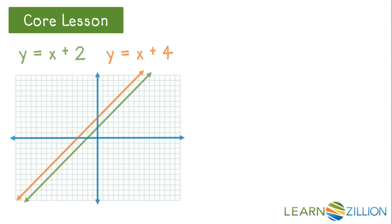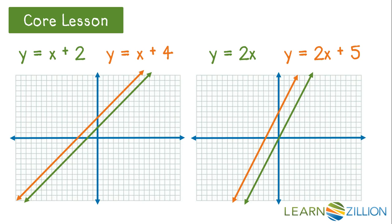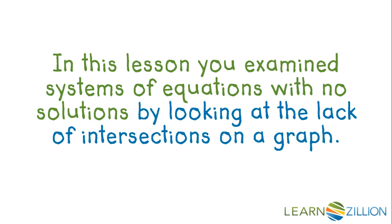In summary, sometimes we are unable to find a solution to a system of equations because there is no point of intersection on the graph. This means that the system of equations in two variables has no solutions that will satisfy both equations. In this lesson, you examined systems of equations with no solutions by looking at the lack of intersections on a graph.